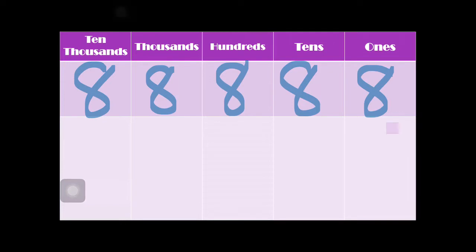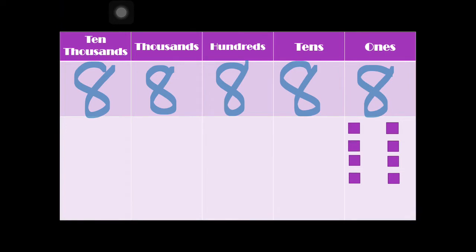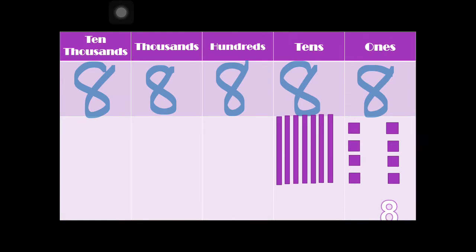If each block is equal to one and we have eight ones, let's count: one, two, three, four, five, six, seven, eight. So the value of digit 8 at the ones place is 8. How about at the tens place? If this stick is equal to 10, let's count: 10, 20, 30, 40, 50, 60, 70, 80. So the value of digit 8 at the tens place is 80.